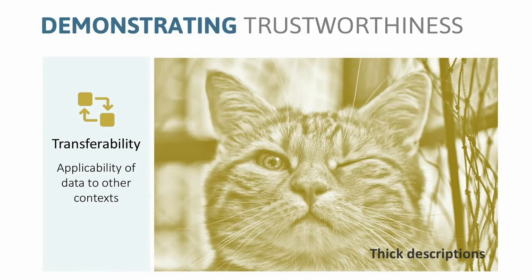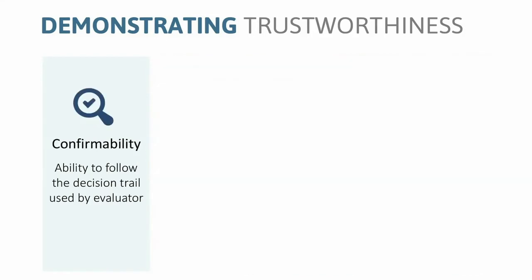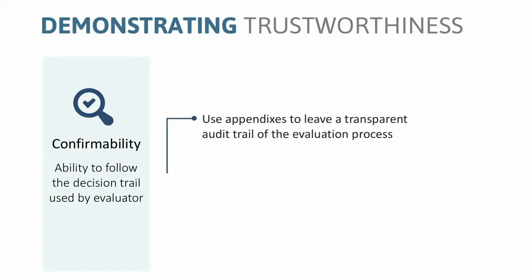Confirmability refers to the ability of someone else to follow the decision trail used by an evaluator to determine the extent that findings were determined without evaluator bias. Qualitative evaluations acknowledge that evaluators bring their own values, perspectives, and assumptions. Many qualitative evaluators discuss the importance of leaving an audit trail — a transparent description of the evaluation process and justification for why decisions were made. In many cases this would be too detailed to include in the body of the report, so we suggest taking advantage of appendices.